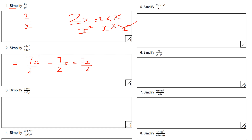Question three: simplify the expression. 18 divided by 3 is 6. x to the 1 divided by x squared: doing 1 subtract 2 gives minus 1, so it's 6x to the minus 1. y divided by y equals 1, so the answer is 6x to the minus 1, which can also be written as 6 over x, since x to the minus 1 is 1 over x.